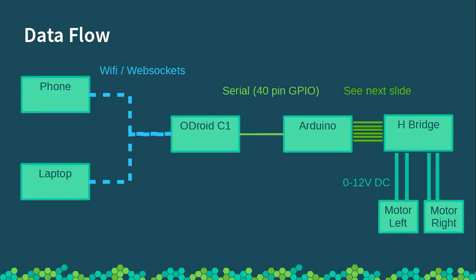Going further into the details of how my setup works: on the left-hand side I have a phone or laptop using Wi-Fi and WebSockets to talk to the Linux processor. At the moment it does basic things like saying go forwards, go left, go right. All the Odroid is really doing is taking the stuff coming in off the Wi-Fi and spitting it down a serial port to the Arduino. The Arduino then controls the H-bridge, which takes a bunch of GPIO from the Arduino and gives you two 12-volt lines — full speed is 12 volts, quarter speed is around 3 volts.